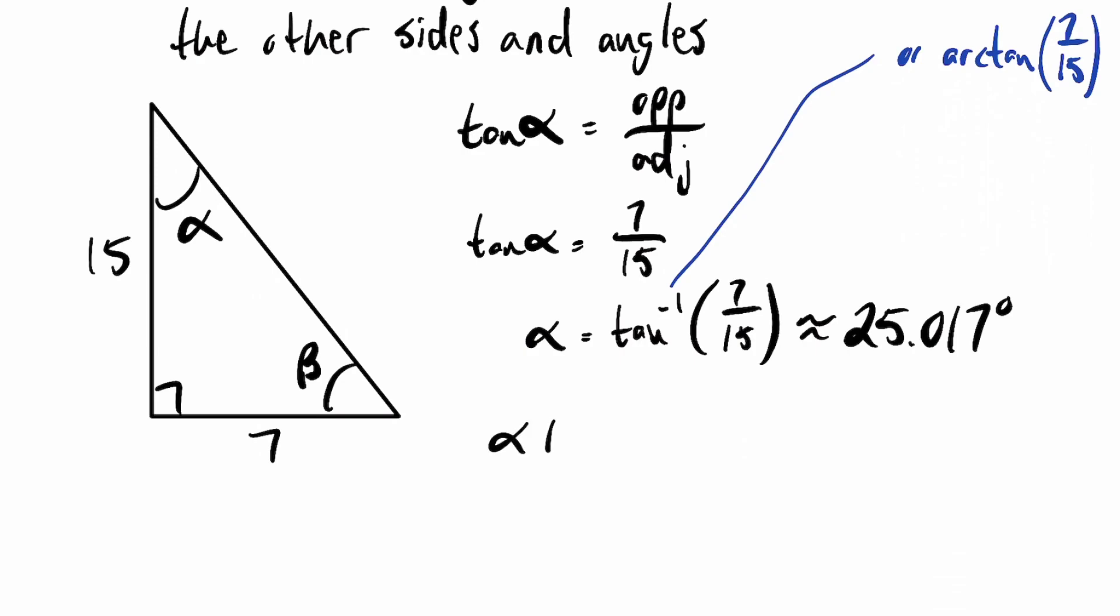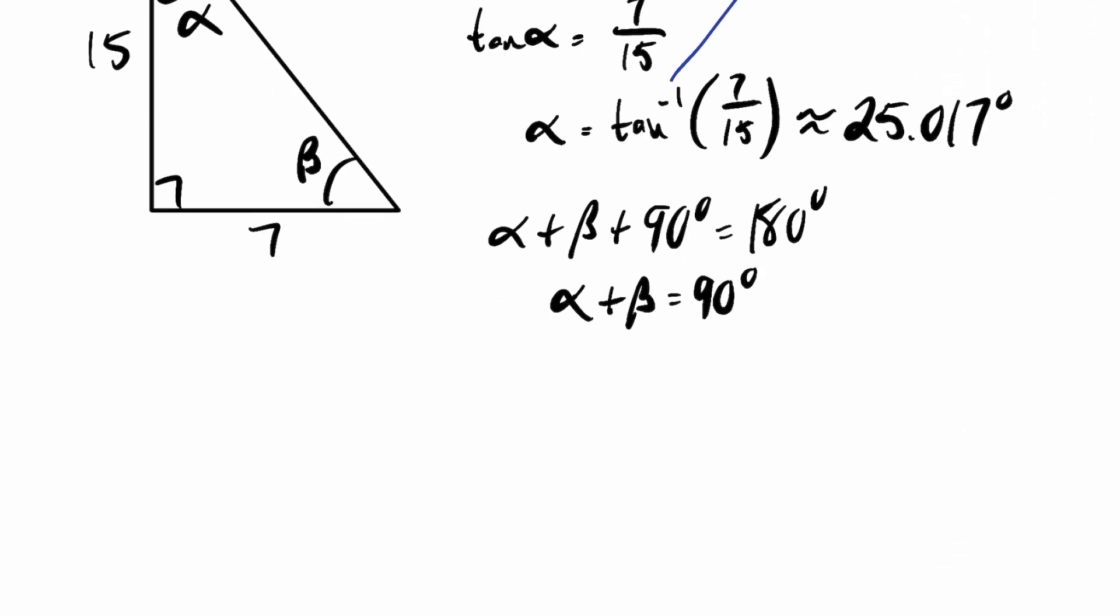Since I know this angle and I know this angle, that means I can work out what beta is because the three angles in a triangle add up to 180 degrees. So alpha plus beta plus 90 degrees, that's the right angle, that's going to be 180. So if I subtract 90 on both sides, I'll have alpha plus beta equals 90 degrees. And then I can subtract alpha on both sides. So beta equals 90 degrees minus alpha.